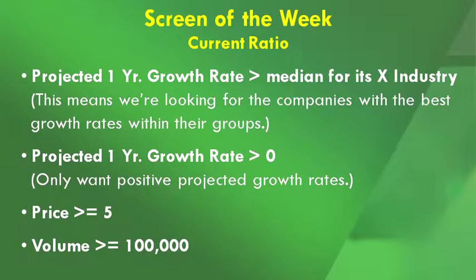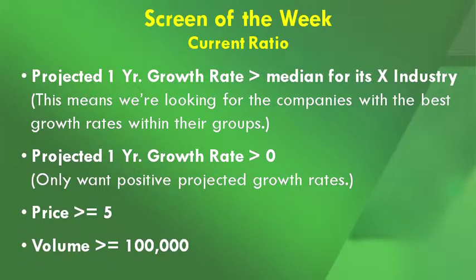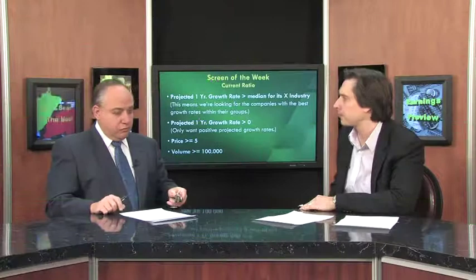Then we want the projected one-year growth rate to be greater than the median for its industry. We also want the projected one-year growth rate to be greater than 0, so it has to be positive. All of these criteria are applied to companies with a price greater than $5 and a volume of greater than 100,000 shares.